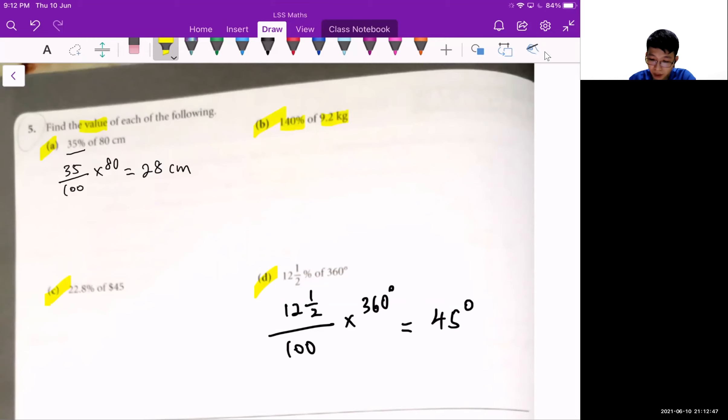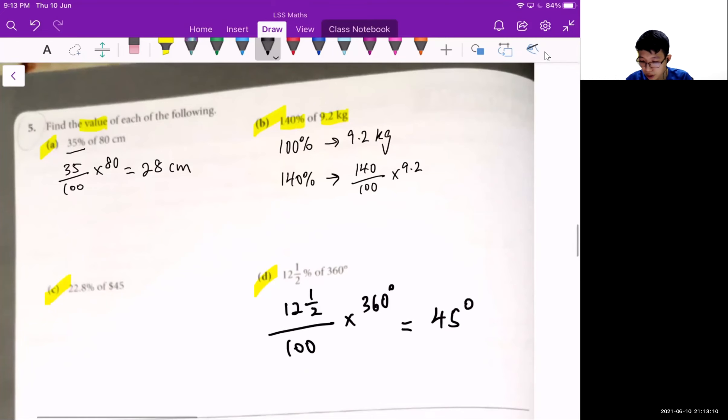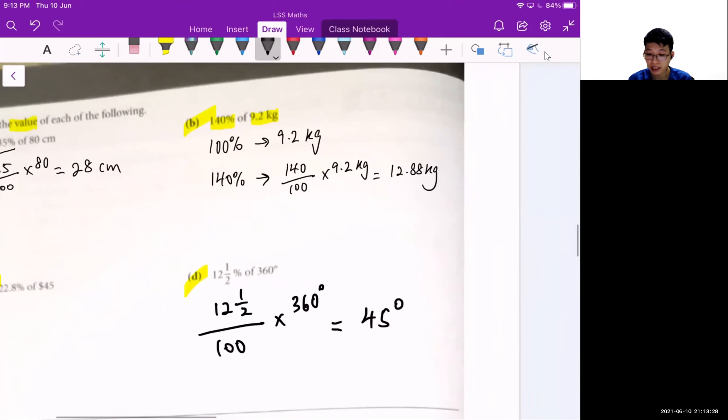So how do I find? I know that 100% is 9.2 kg. So to find 140%, all I need to do, I can express 140 as a fraction of 100 and multiply with 9.2 kg and this will give me 12.8 kg.